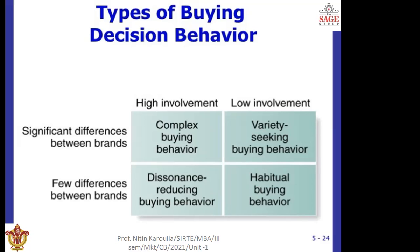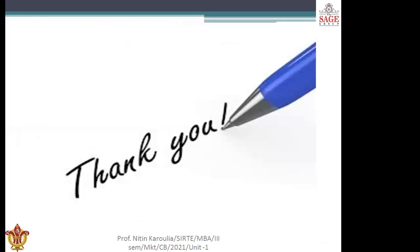Finally, habitual buying behavior occurs when the customer has low involvement and there are few differences between brands. This normally happens when the price of the product is not very high and the product is not used for a longer period of time. That covers today's class on consumer behavior. In our next class, we will continue from here. Thank you so much.